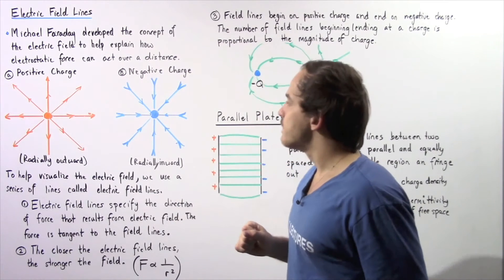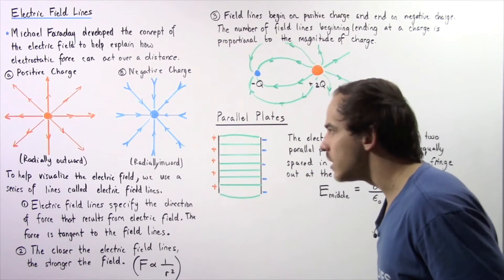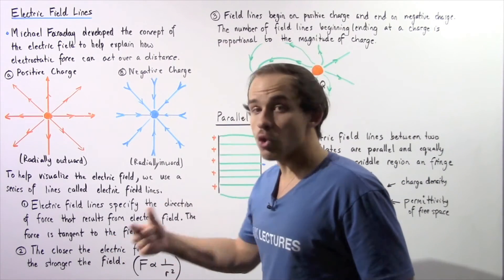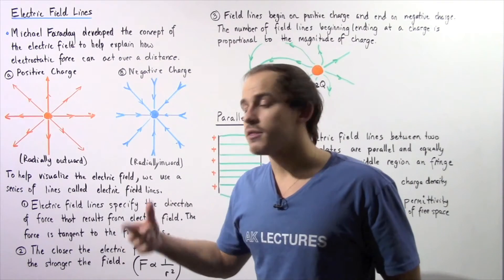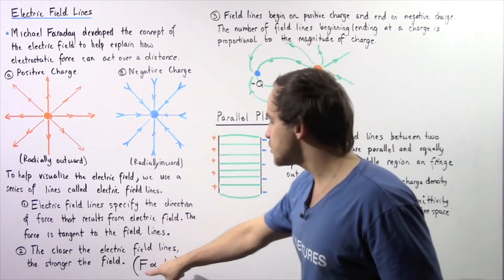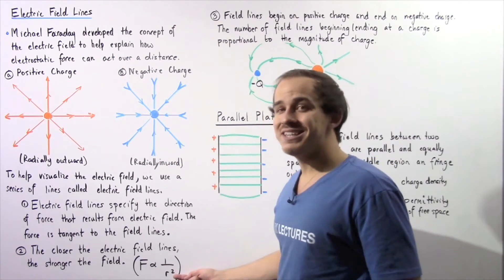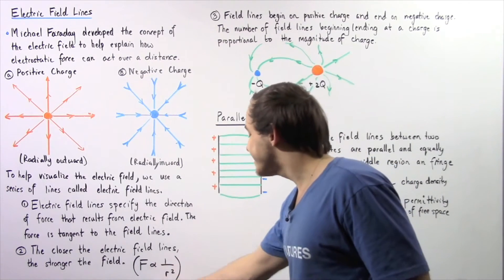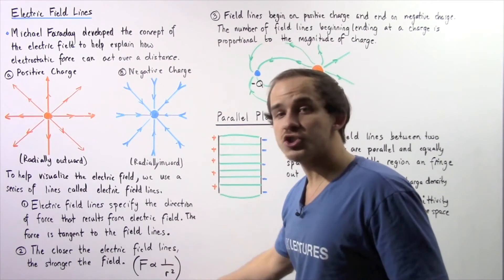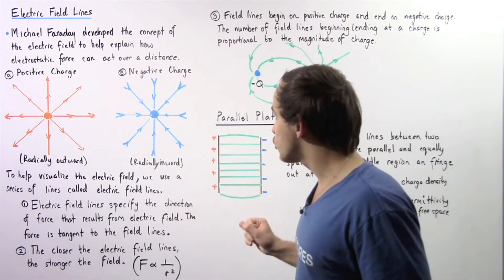Now let's move on to fact number two: the closer the electric field lines are to one another, the stronger the field is. And the stronger the field is, the stronger the force is. That's because force is inversely proportional to the square of the distance. So if the distance between field lines increases, the force will decrease, and if it decreases, the force will increase.